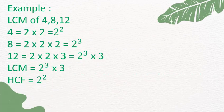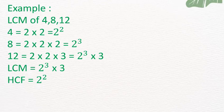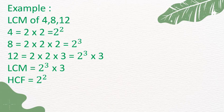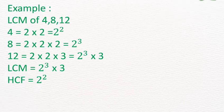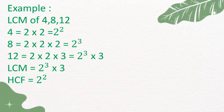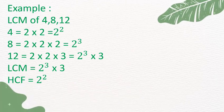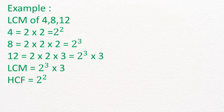How can we find the LCM of 4, 8, and 12? We write 4 = 2 × 2 = 2². 8 = 2 × 2 × 2 = 2³. 12 = 2 × 2 × 3 = 2² × 3. LCM means product of all factors with the highest exponent, so LCM = 2³ × 3. HCF = 2².